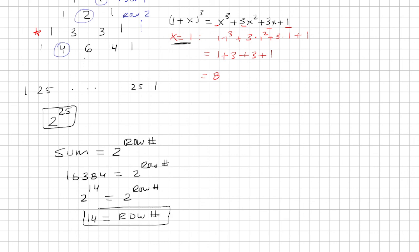So, in other words, row 14 will have the sum of the terms equal to 16,384.